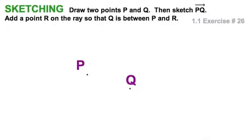Well, another sketch here. We've got points P and Q, and we'll draw the ray PQ. Now read this part carefully. Add a point R on the ray so that Q is between P and R. Be careful. The R has got to be out here. Remember, because it says Q is between the P and the R. A little tricky.